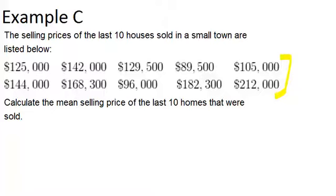Okay, so to calculate the mean selling price, that means we would have to add up all 10 numbers and then divide by 10. So first, find the sum. That means add up all 10 numbers.